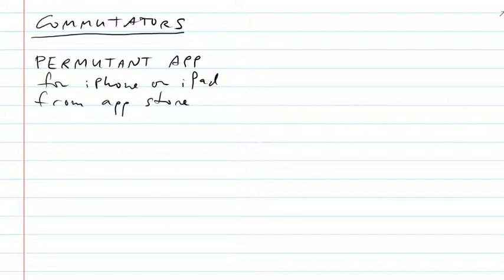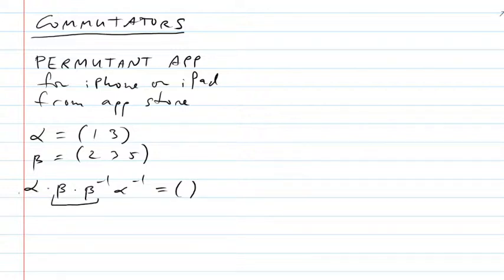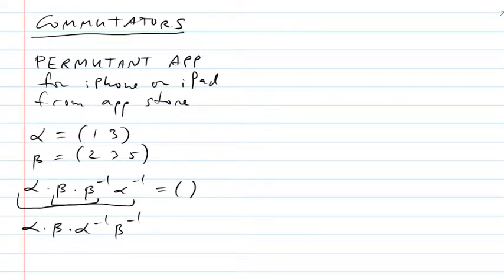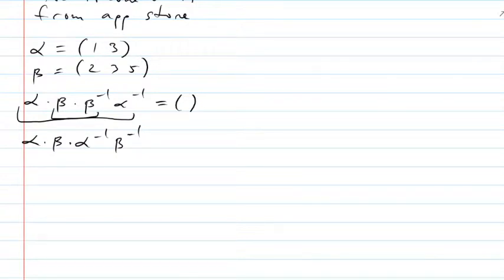A commutator is a sequence of four moves. Suppose I have two permutations: alpha is (1,3) and beta is (2,3,5). If I did a composition of alpha, beta, beta-inverse, alpha-inverse, that would just get us back — it wouldn't do anything because those pairs undo each other. But if instead I do alpha, beta, alpha-inverse, beta-inverse, that's usually not going to return us to the identity. Let me calculate it out.